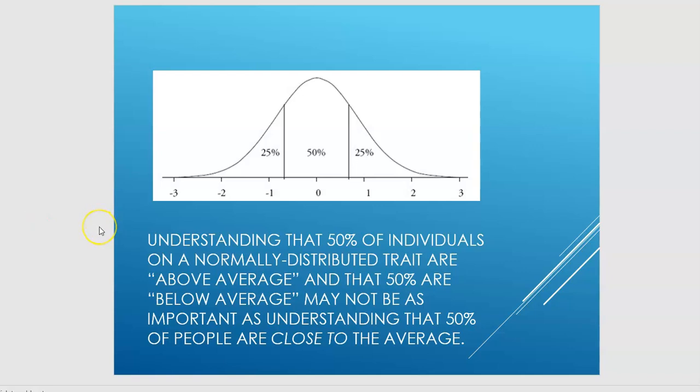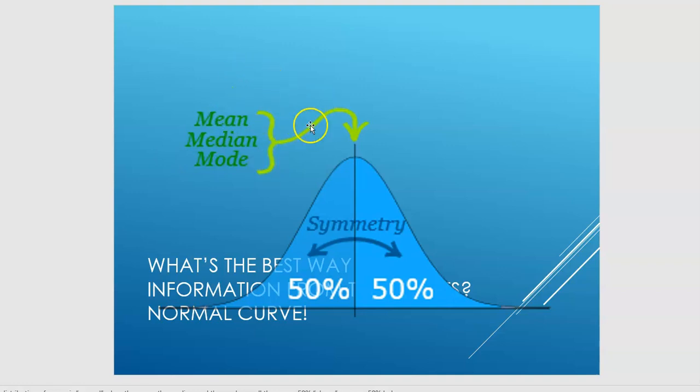One thing that I always encourage people to think about in terms of interpreting scores on a normal distribution is that we get three different kinds of descriptive statistics when we take a big group of people and average and give people scores. We get three different measures. There's the mean, the median, and the mode. And the mean is essentially what we usually mean by the word average.